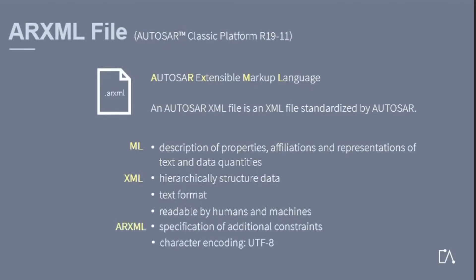AUTOSAR specifies additional constraints on the AUTOSAR XML descriptions. For example, the character encoding of AUTOSAR XML descriptions must be UTF-8 — no other encodings are allowed. Furthermore, AUTOSAR XML descriptions should start with an XML declaration that declares UTF-8 as the encoding. AUTOSAR also restricts the maximum length of the file name to 255 characters.